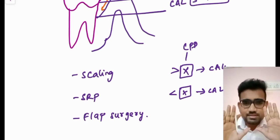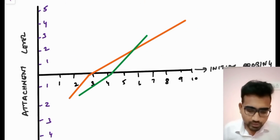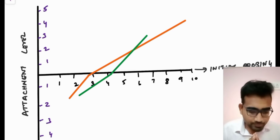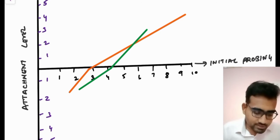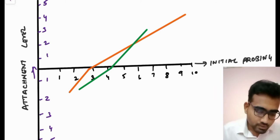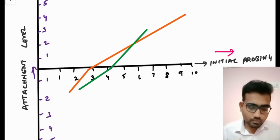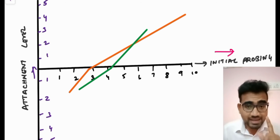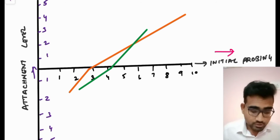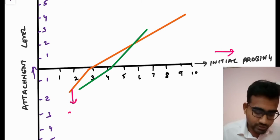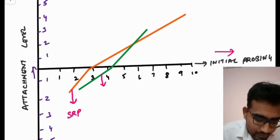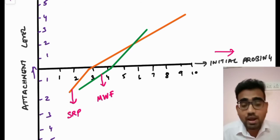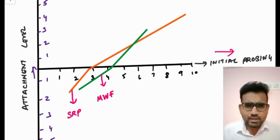Now what is this X? This picture will tell you everything. Say for example this is your attachment level and this is going to be the initial probing depth. I am going to fix the CPD — critical probing depth — for three procedures. The orange line is for scaling and root planing, the green line is for modified Widman flap, and I will tell you another value later in this video.